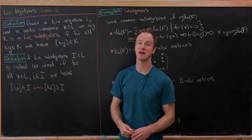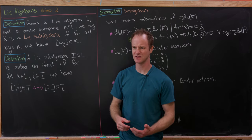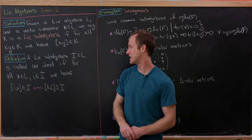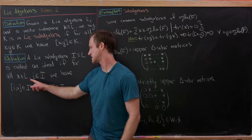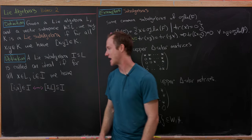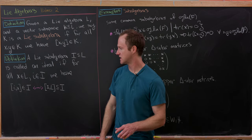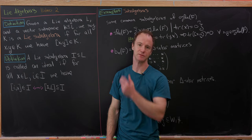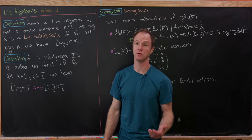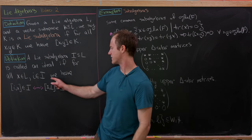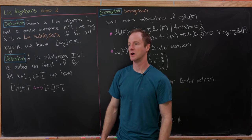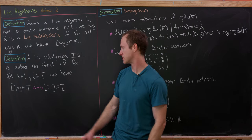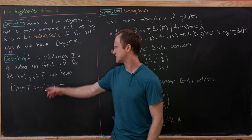Next up we want to talk about a special type of subalgebra known as an ideal, in parallel to an ideal of a ring or a normal subgroup of a group. A Lie subalgebra I of L is called an ideal if, for all x in L and i in I, we have bracket [i, x] is in I. So you only need one element inside of the ideal — this is the absorption property common in rings. In global notation, the bracket of I with L is a subset of I.